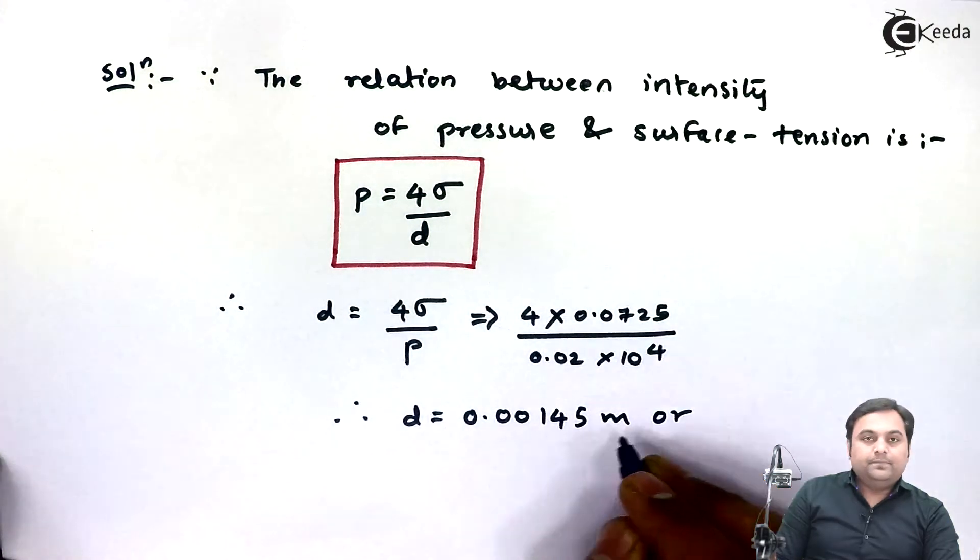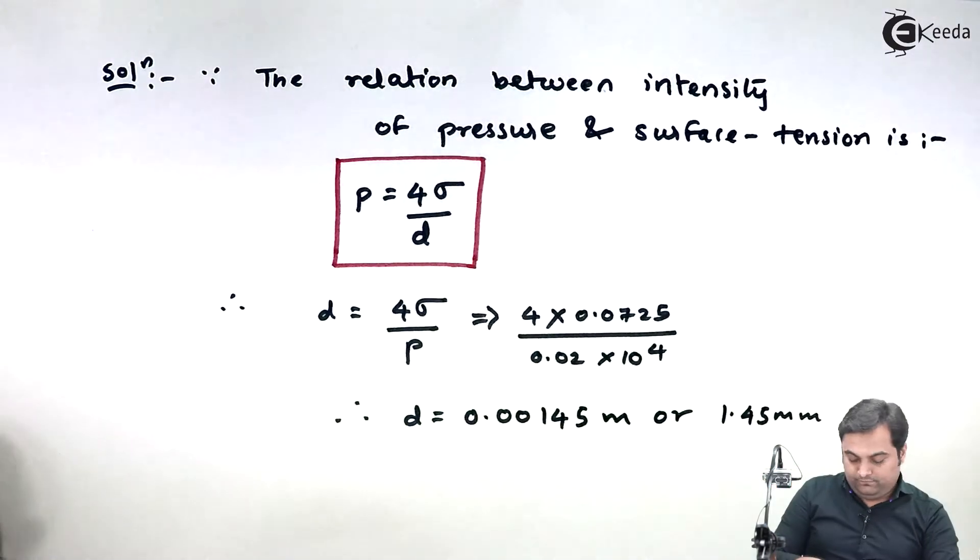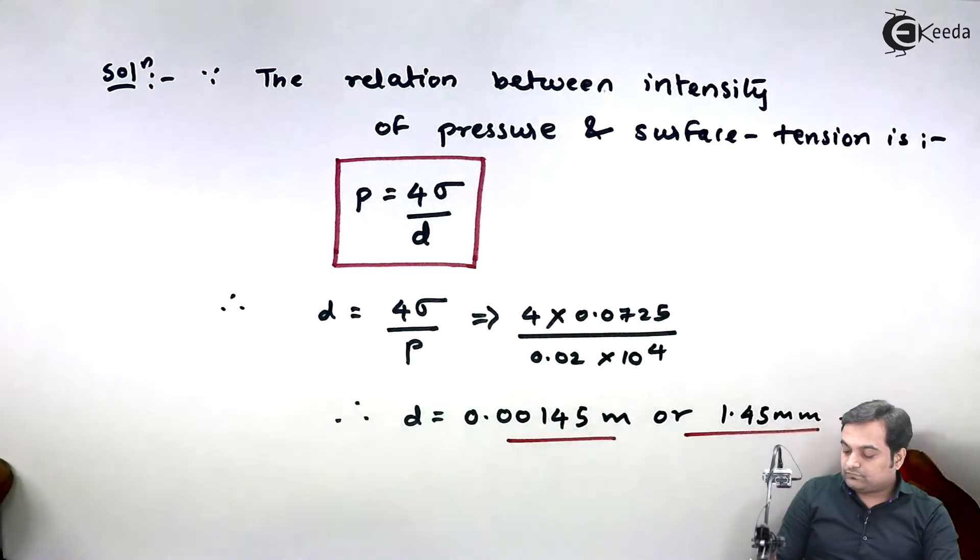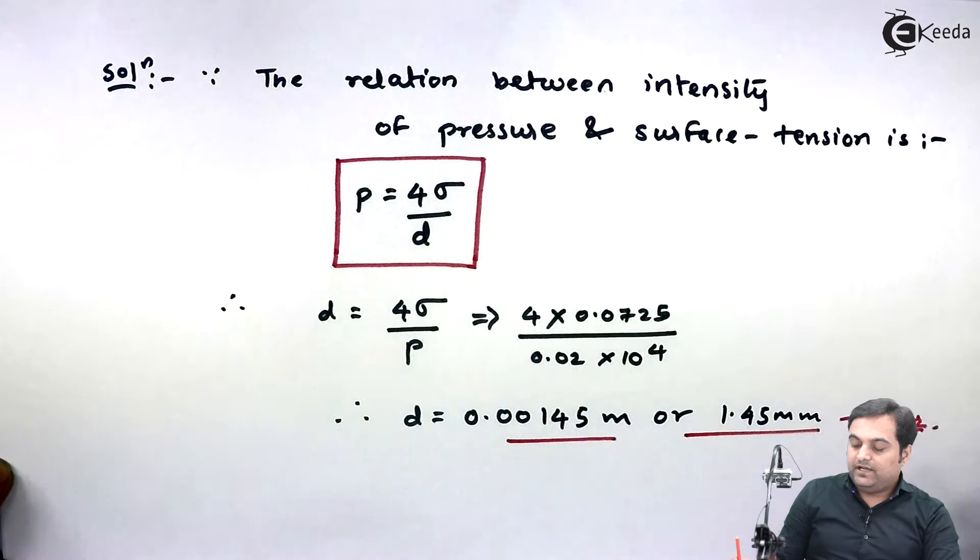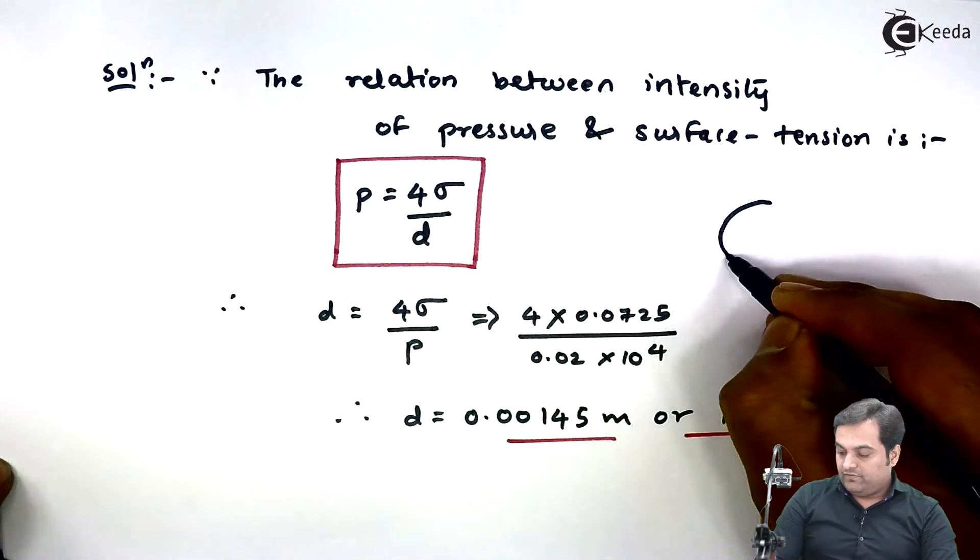if I multiply by thousand, my answer is 1.45 mm - that's my answer. So here in this problem we were